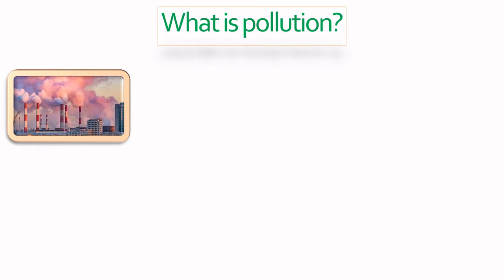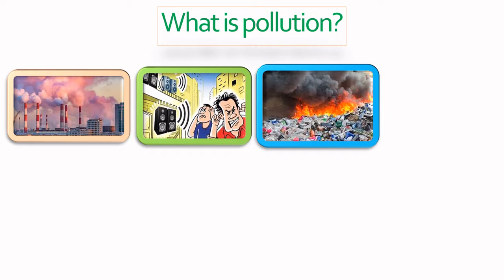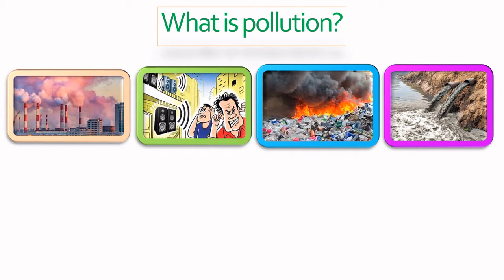In the first image we can see a lot of chemical gas is released in the air. In the second image we can see music is played on high volume on speakers, and people are getting disturbed due to this loud noise. In the third image we can see plastic or waste material is being burned and harmful gas is released in the air. In the fourth image we can see chemical or dirty water is released into rivers.